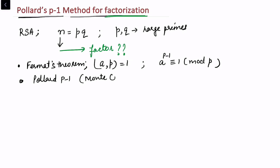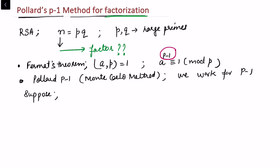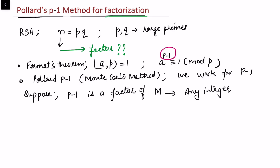Suppose that p-1 is a factor of some integer m. At this moment I am choosing any integer m and saying that p-1 is a factor of m. In this circumstance I can write m as (p-1) times k, because m is larger and p-1 is a factor of m, so m equals (p-1) times some integer k.